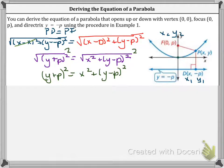So if we do FOIL and multiply it out, on this left side it becomes Y squared plus 2PY plus P squared equals X squared plus Y squared minus 2PY plus P squared.